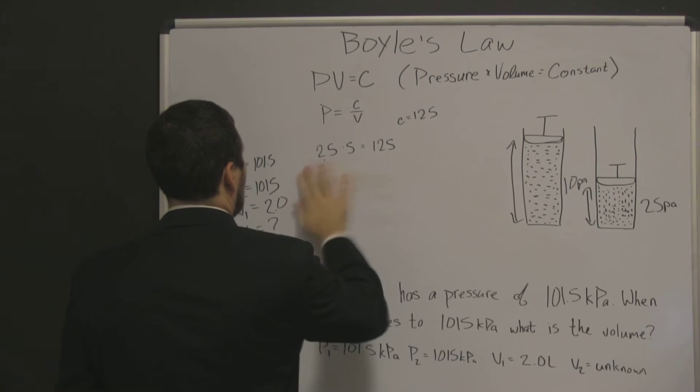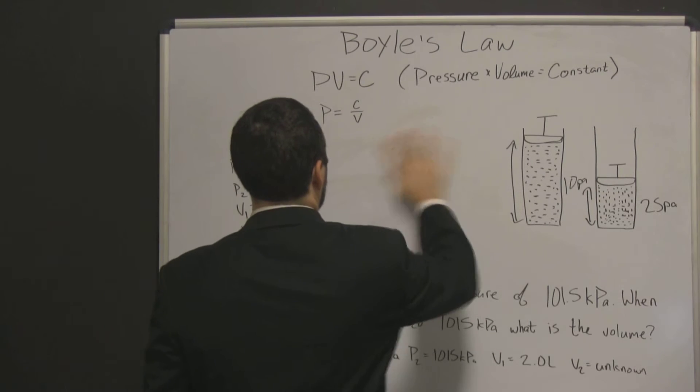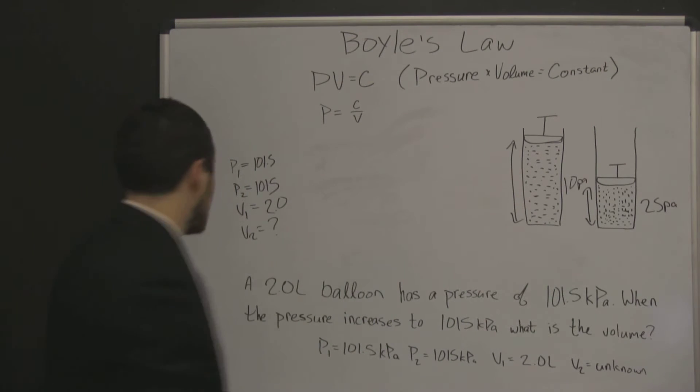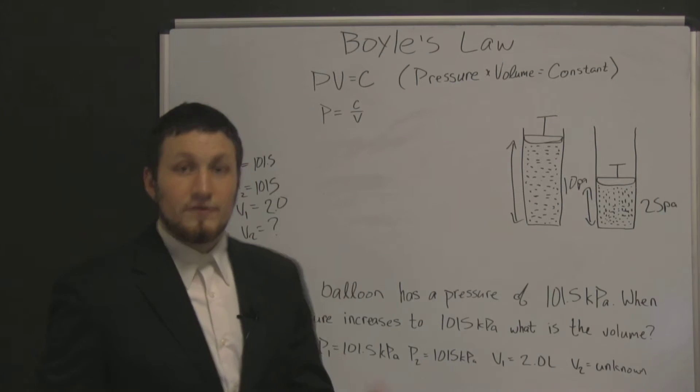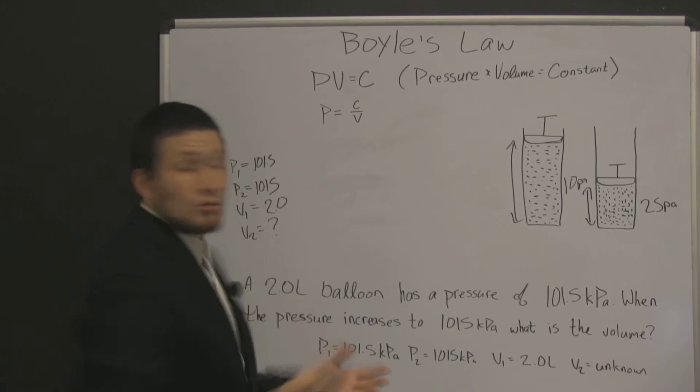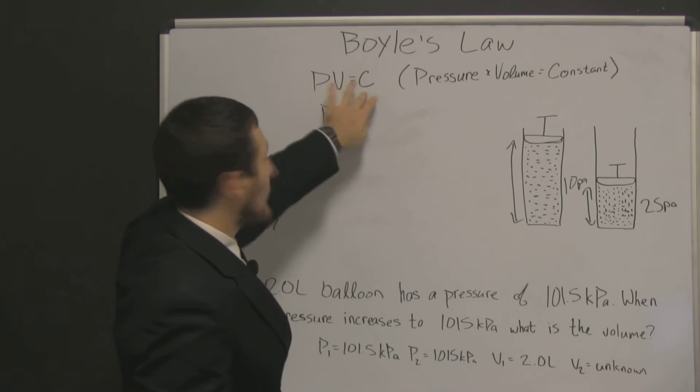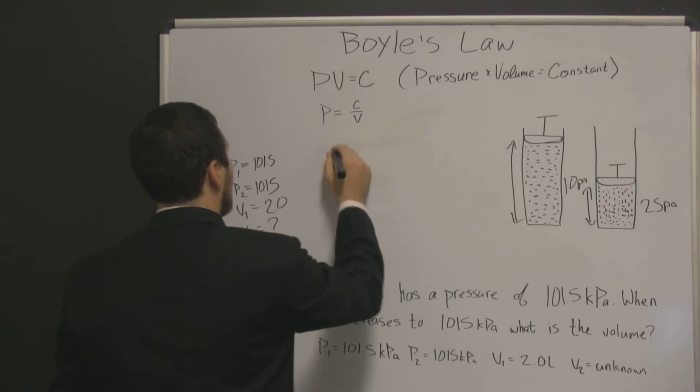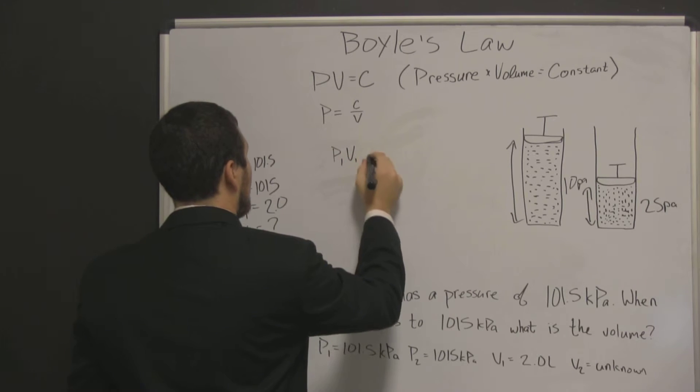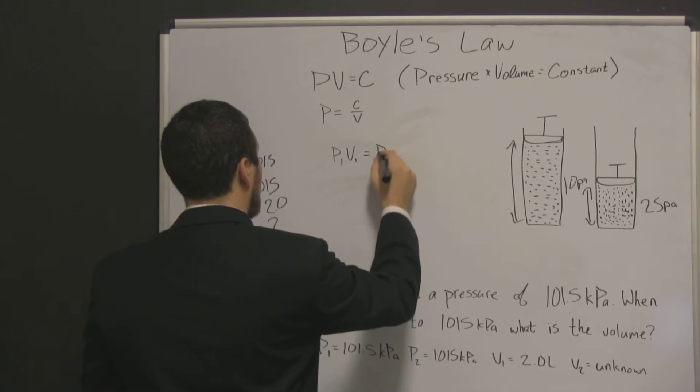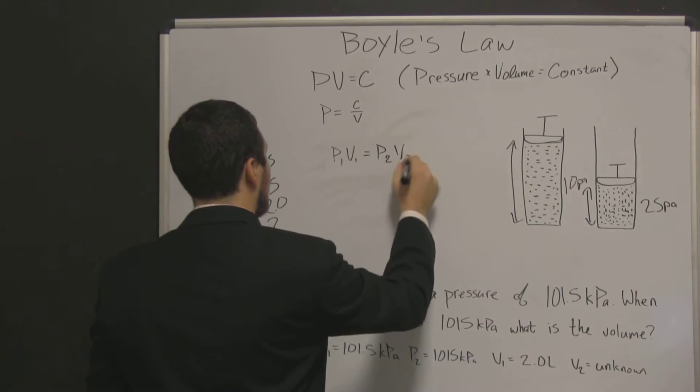Now there's two ways we could work this. We could work this from the P1 and V1 and solve for C. Or because we know that they're equal, they equal the same constant, we can actually take P1 V1 is equal to P2 V2.